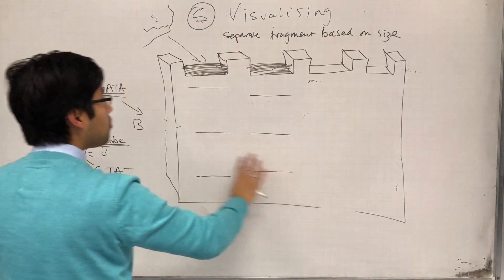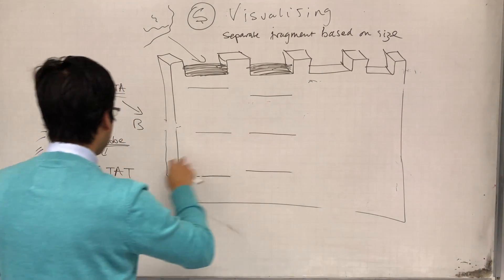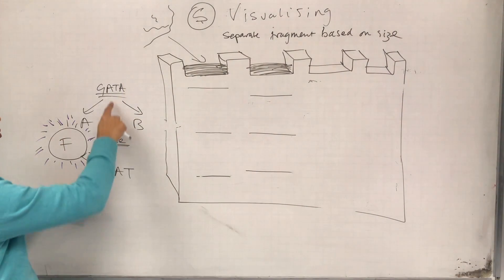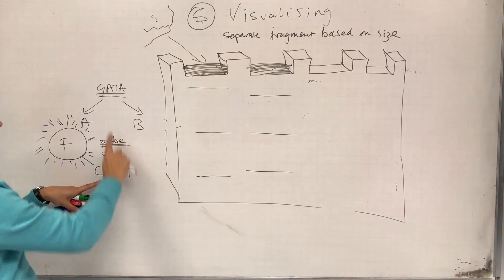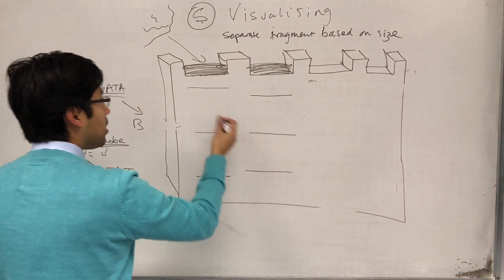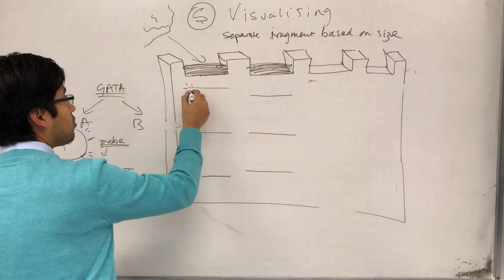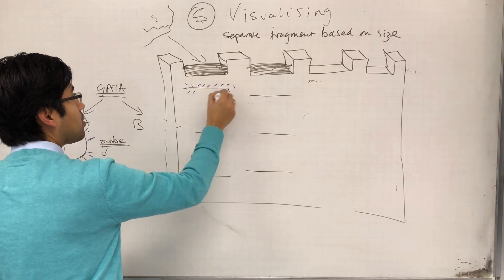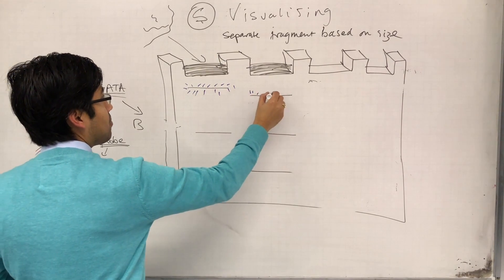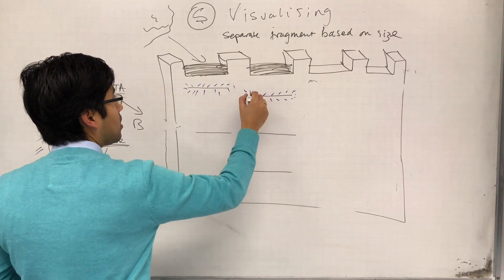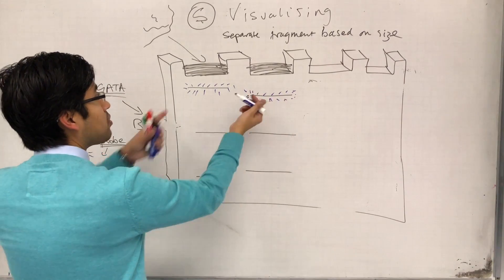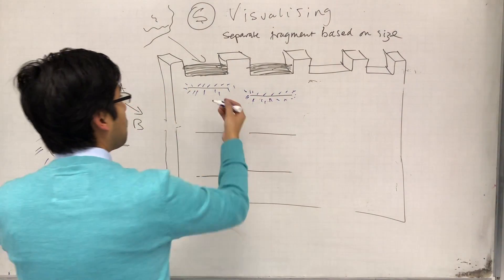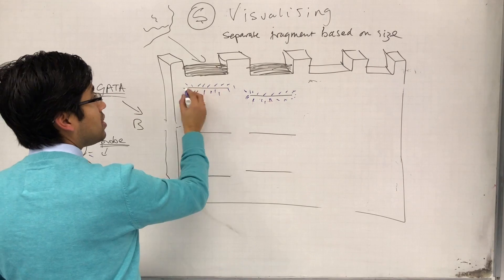And what will happen is that the probe will start to concentrate where it's found its complementary sequence. So if the probe starts to concentrate here, I will start to get a... If I'm exciting the membrane with a UV signal, I will start to see a purple signal from these bands.